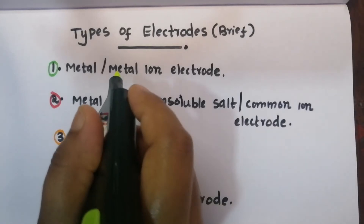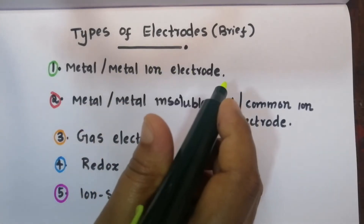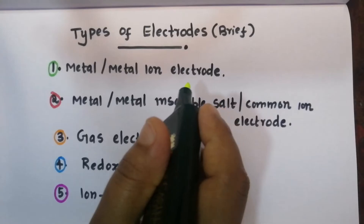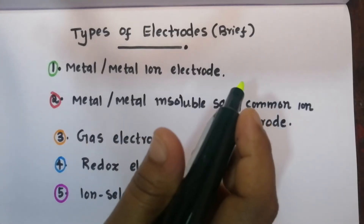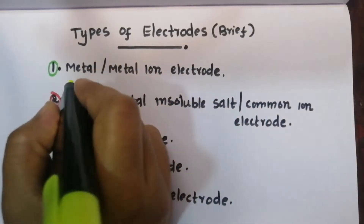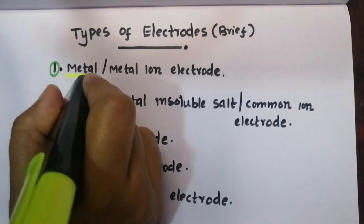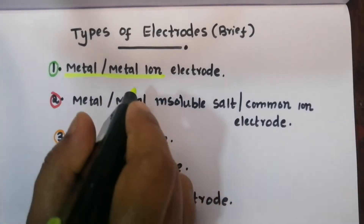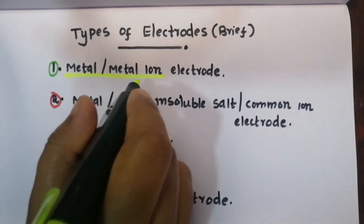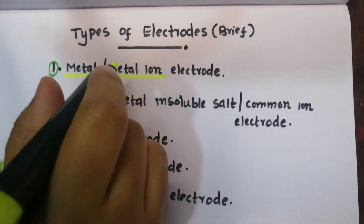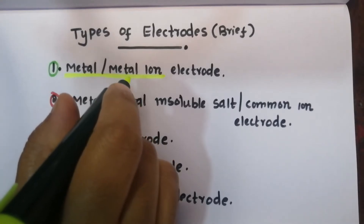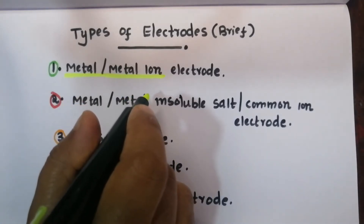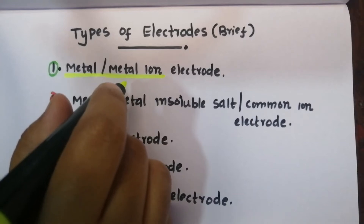One electrode type is a metal/metal-ion electrode, where a metal is in contact with its metal ion. An example is the Daniel cell. In the Daniel cell, there is a half cell: zinc in zinc sulfate, and copper in copper sulfate. That is a metal/metal-ion electrode.